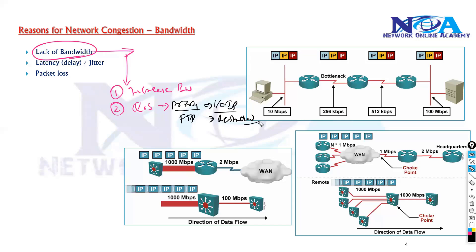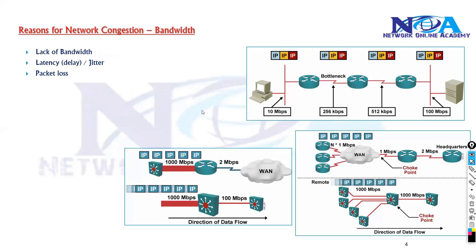These are the things we can do to overcome congestion — that's what we are going to do in our quality of service implementation. Now, the next topic is latency, also called delay, and the variation in delay, which we call jitter.